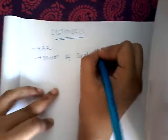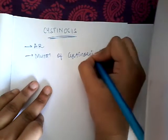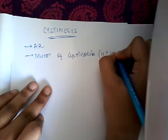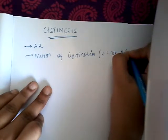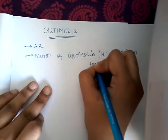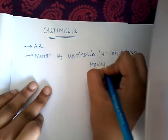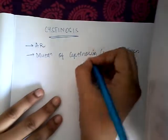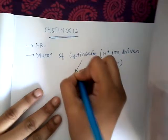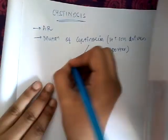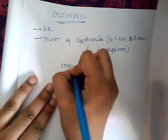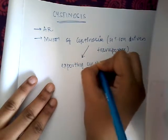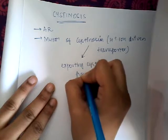What is cystinosin? It is a hydrogen ion driven transporter. Cystinosin is responsible for exporting cysteine from lysosomes.